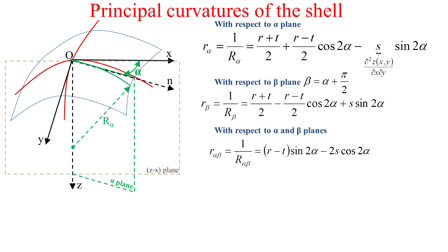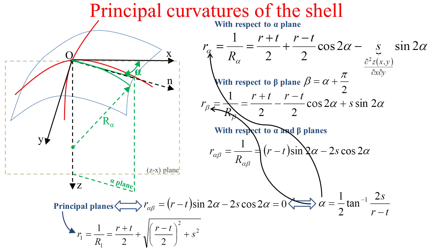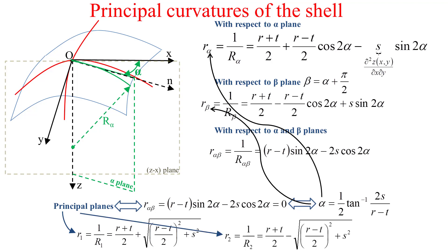If the alpha and beta planes are the principal planes, it is necessary that the twisting curvature r_alpha_beta equals zero. This yields a specific angle alpha. Substituting this alpha into the curvature expressions gives the two principal curvatures R1 and R2, which are evaluated in the principal planes.